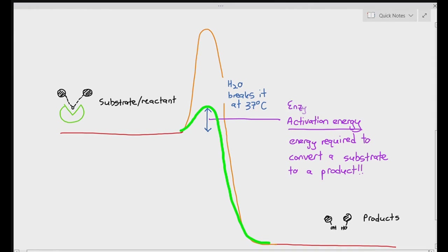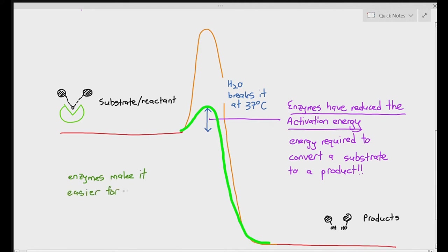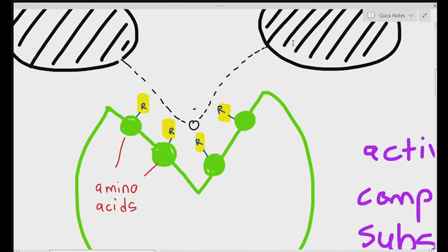So what happens to the activation energy? The activation energy has been reduced by the enzyme. That's what enzymes fundamentally do — they make the reaction easier by reducing the activation energy. They do this by having the active site bind to the substrate and weaken the bonds within the substrate.